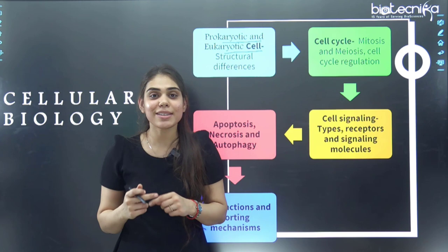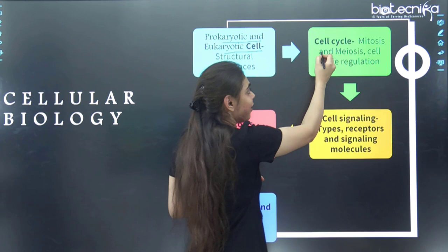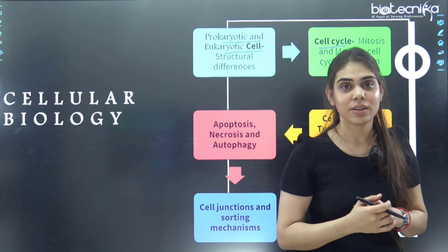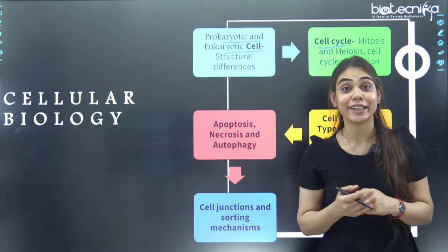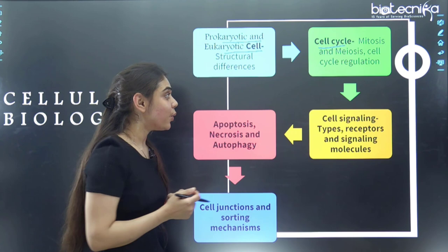Next, we have the cell cycle. What is mitosis? What is meiosis? What are the different stages of mitosis and meiosis? What are the chromosomal contents at each phase of the cell cycle? You should also know what checkpoints the cell cycle has and what its regulations are.